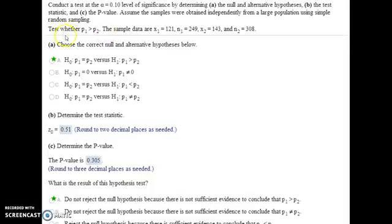For number three we are going to test whether P1 is larger than P2. Here's the information from our samples, one sample from each population. To choose the correct null hypothesis we're going to assume the two population proportions are equal, and our alternative hypothesis was given.